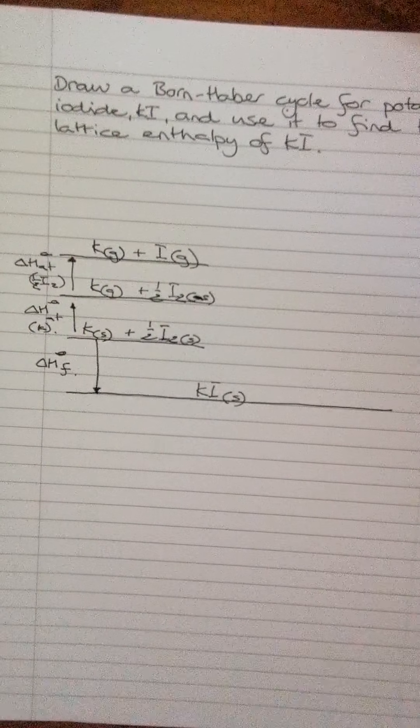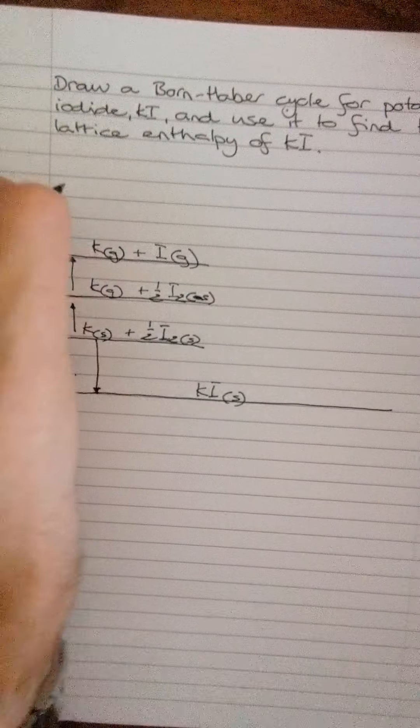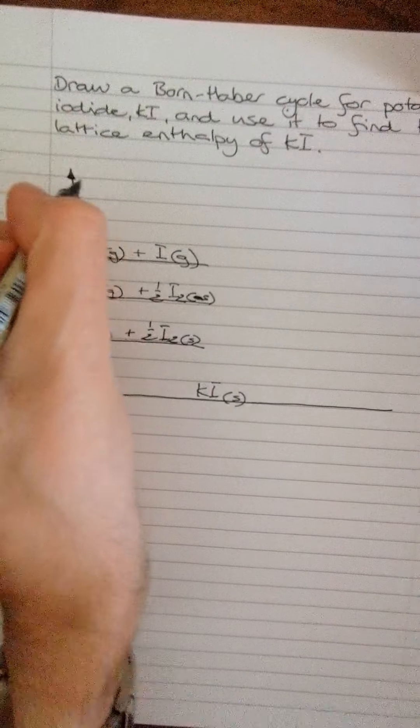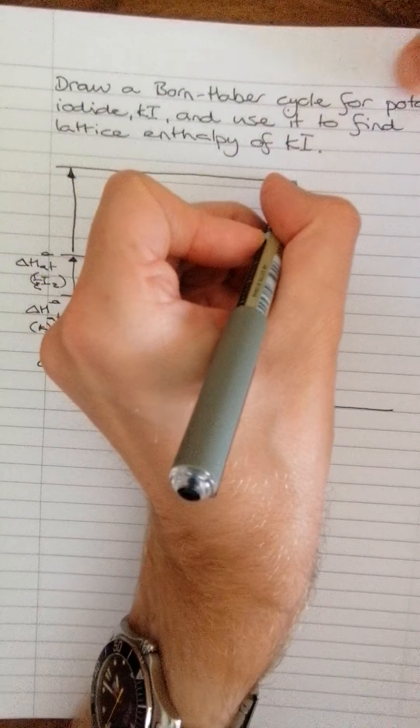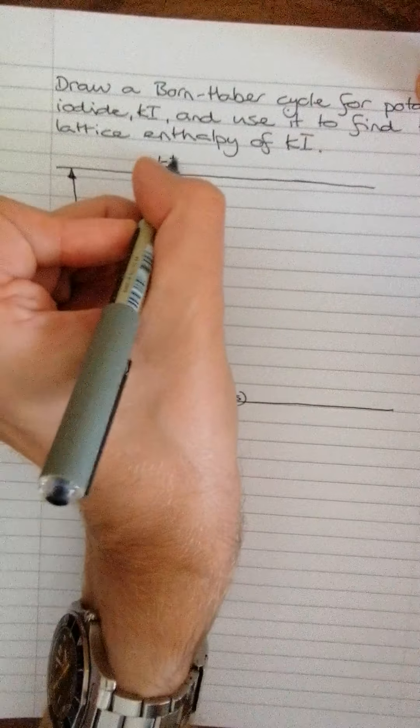So we do in our order we've got atomization, ionization, electron affinity. So ionization next. Ionization is removing one electron. So the first ionization energy is to make our positive ion. The positive ion needs to be potassium in this case. So it goes to K plus.